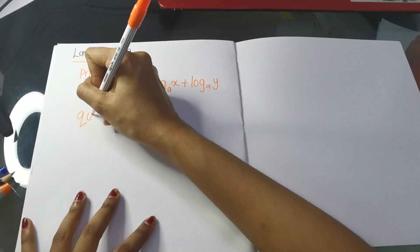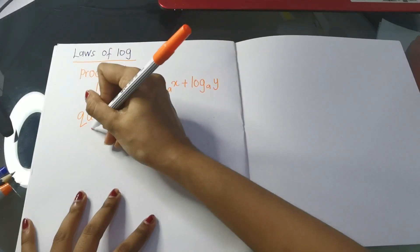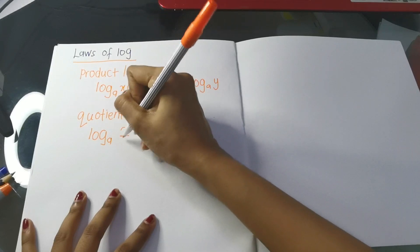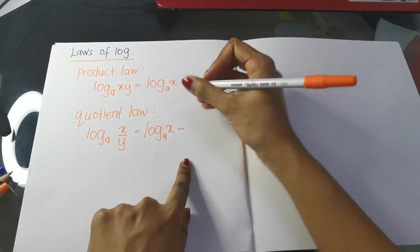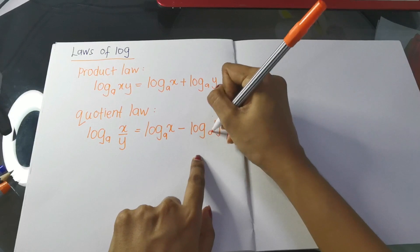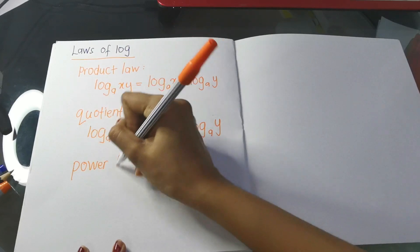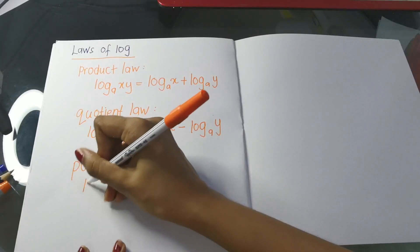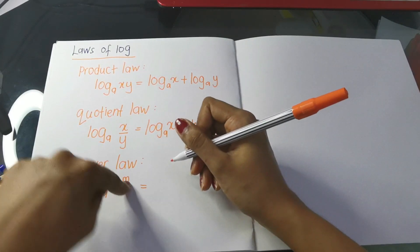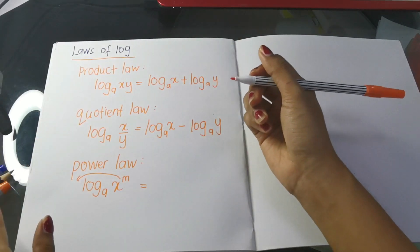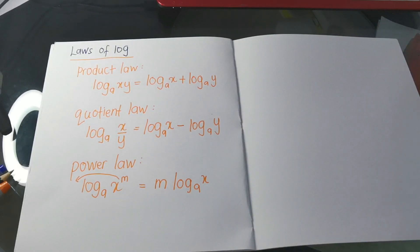The second law is the quotient law — quotient means divide. So log(x/y) base a equals log x base a minus log y base a. The division becomes a minus. The third law is the power law. For example, log base a of x to the power of m — the power jumps to the front, giving us m·log x base a.